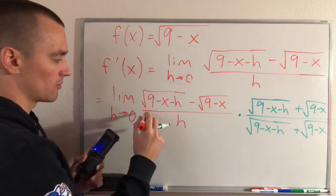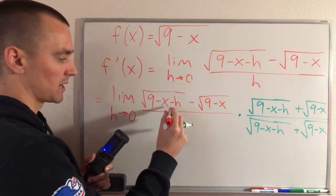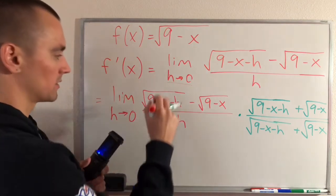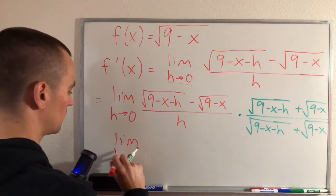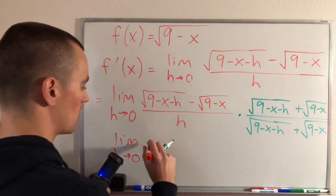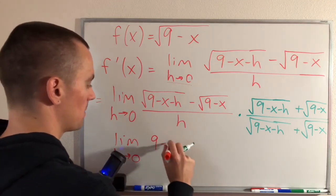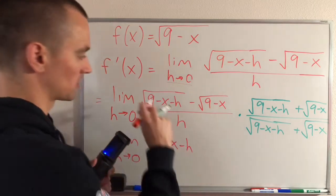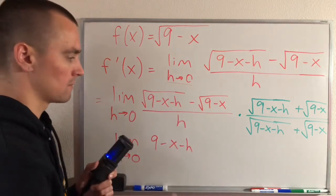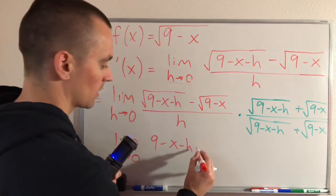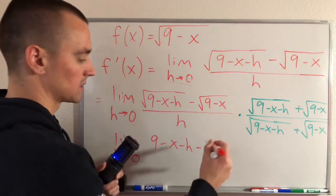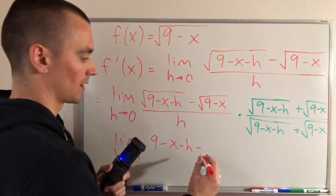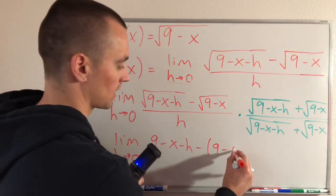So if we get the square root of 9 minus x minus h squared, the squared and the square root are going to cancel out. So we're just going to be left with the limit as h goes to 0 of 9 minus x minus h because our square root is going to get canceled out. And then same thing here, we're going to get minus the square root of 9 minus x squared. The squared and the square root are going to cancel out, so we're just going to have minus 9 minus x.